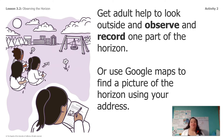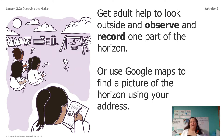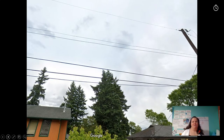Let me talk to you about how you guys are going to make observations about the horizon. You have some choices. One is you can get an adult to help you look outside and make some observations about the horizon just like I did — you go out to a spot, look, decide what's important about the horizon, and draw it. If you can't really get outside, you can use Google Maps to find a picture of your horizon using your address.